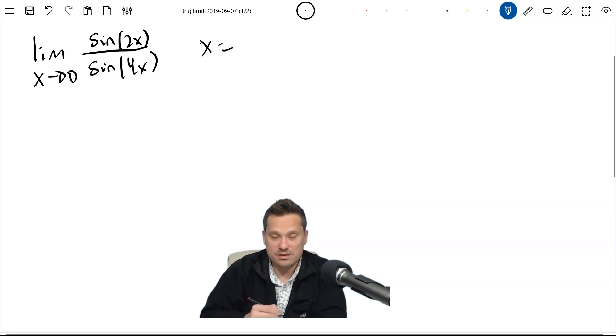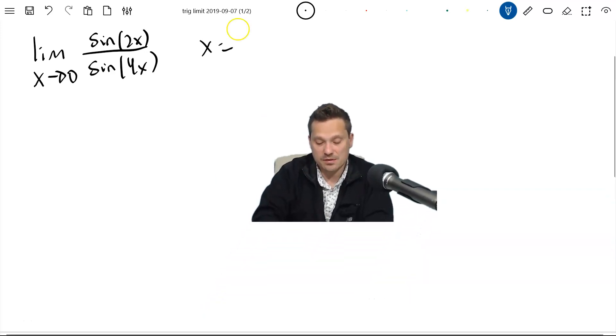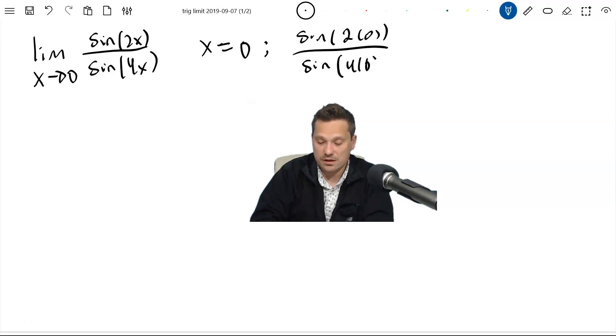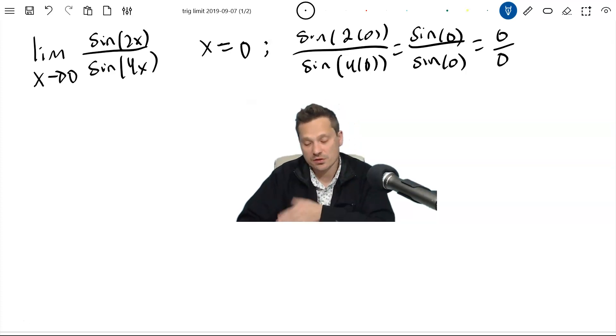First of all, notice something that if you just try to plug in x equals 0 in this position right here, then that would give you the following. You would have sine of 2 times 0 over sine of 4 times 0. That's just sine of 0 over sine of 0, which is 0 over 0 from the unit circle. That's usually where you get those values. And then of course you might know that this is DNE.